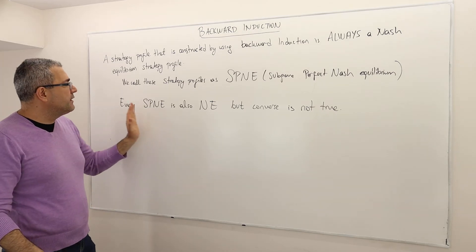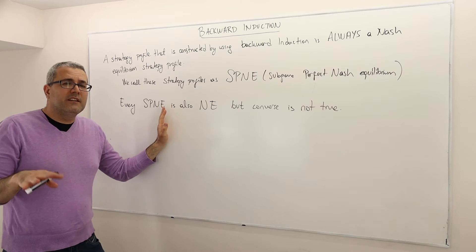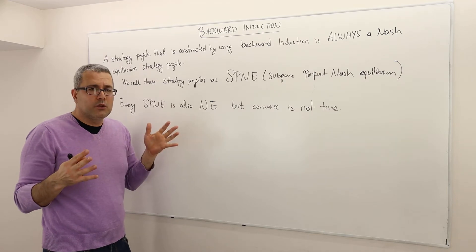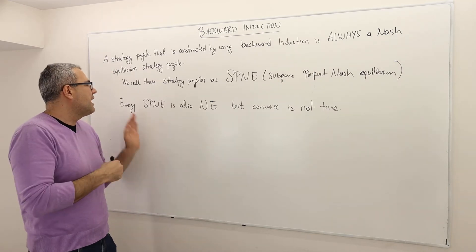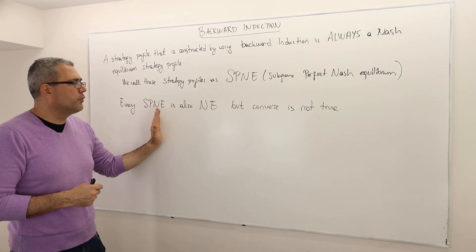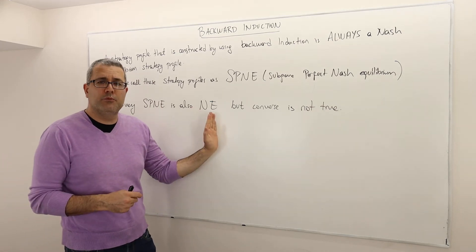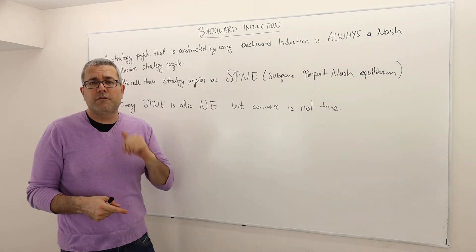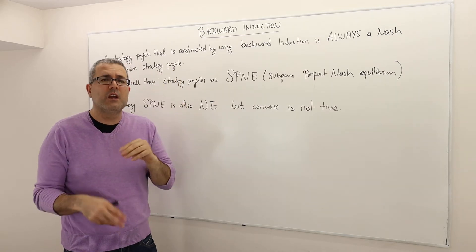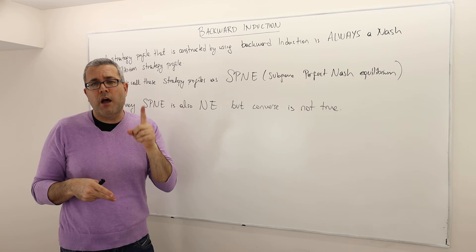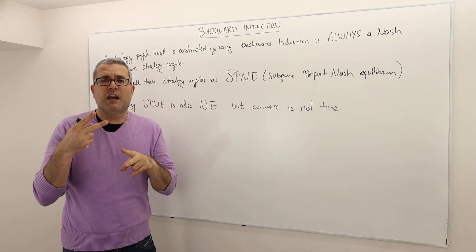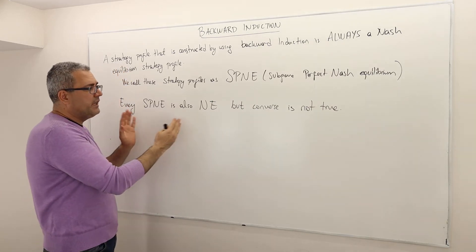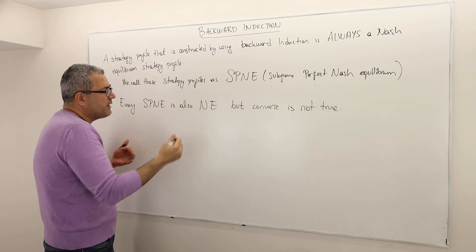Every sub-game perfect Nash equilibrium strategy profile — whether we are looking at pure or mixed strategies — is also a Nash equilibrium strategy profile. But the converse is not true. If you remember our very first example, there are two Nash equilibria but only one sub-game perfect Nash equilibrium. Using backward induction eliminates one of the Nash equilibria.